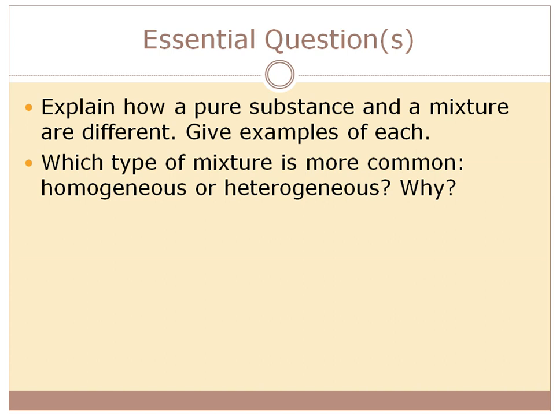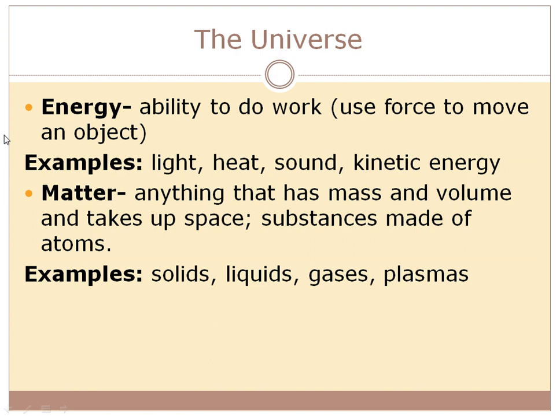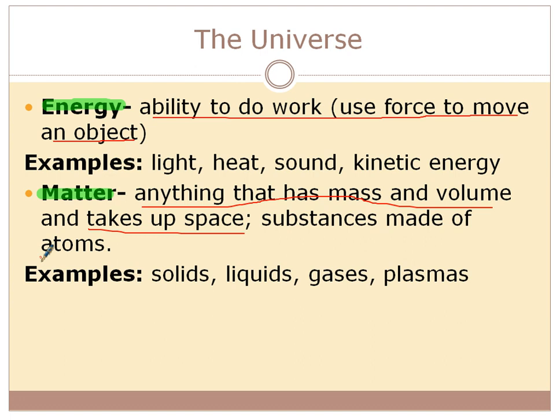The universe can be broken into two major categories: energy or matter. Energy is the ability to do work — using a force to move an object. Examples of energy include light, heat, sound, and kinetic energy. Matter, on the other hand, is anything that has mass or volume, takes up space, and is made of atoms. Energy is not made of atoms and doesn't take up space; matter is made of atoms and takes up space.